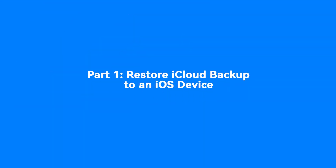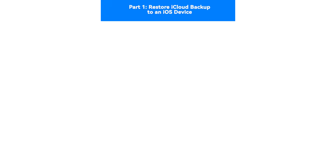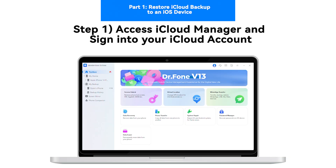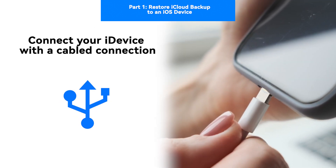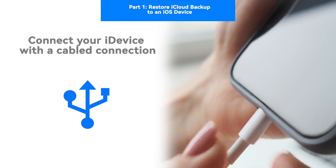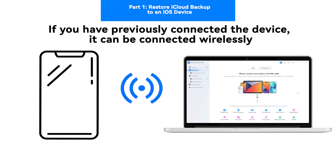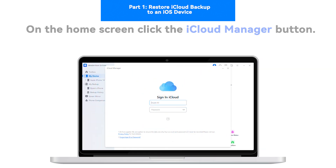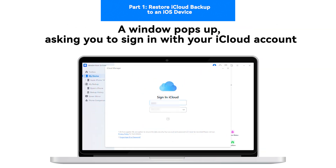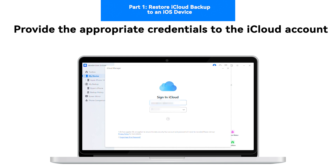Part 1: Restore iCloud Backup to iOS Device. Step 1: Access iCloud Manager and sign in to iCloud Account. Connect your iDevice with a cabled connection. If you have previously connected the device, it can be connected wirelessly. On the home screen, click the iCloud Manager button. A window pops up asking you to sign in with your iCloud account. Provide the appropriate credentials.